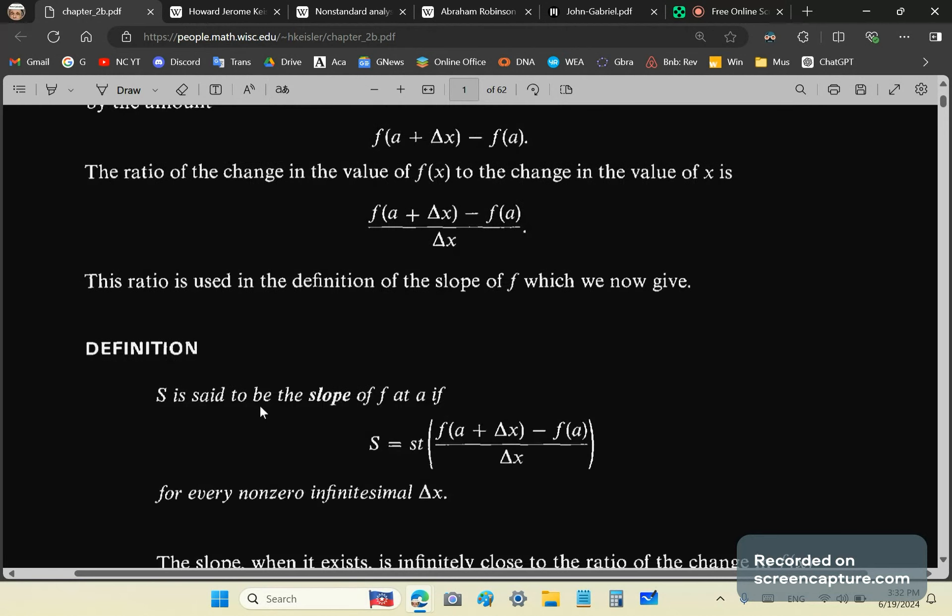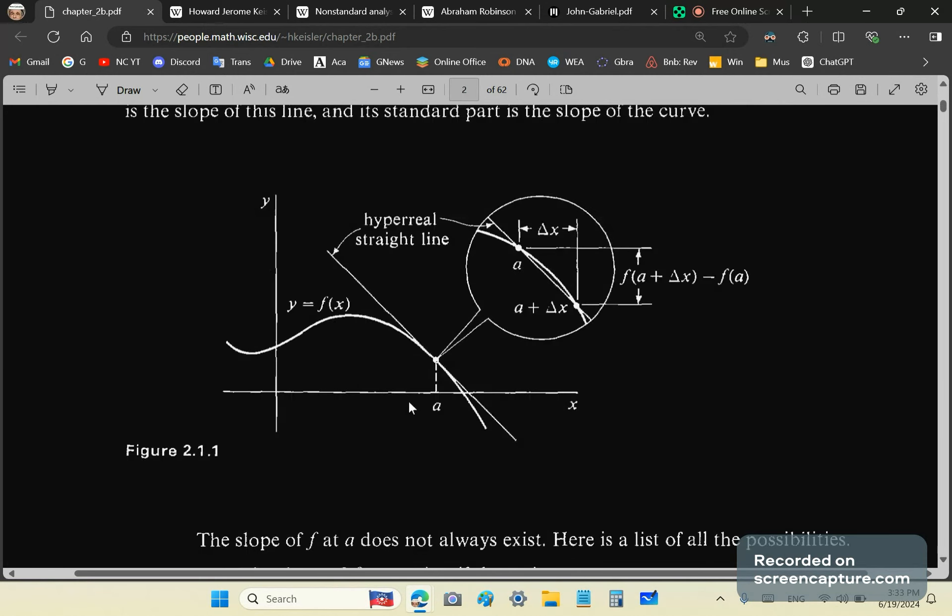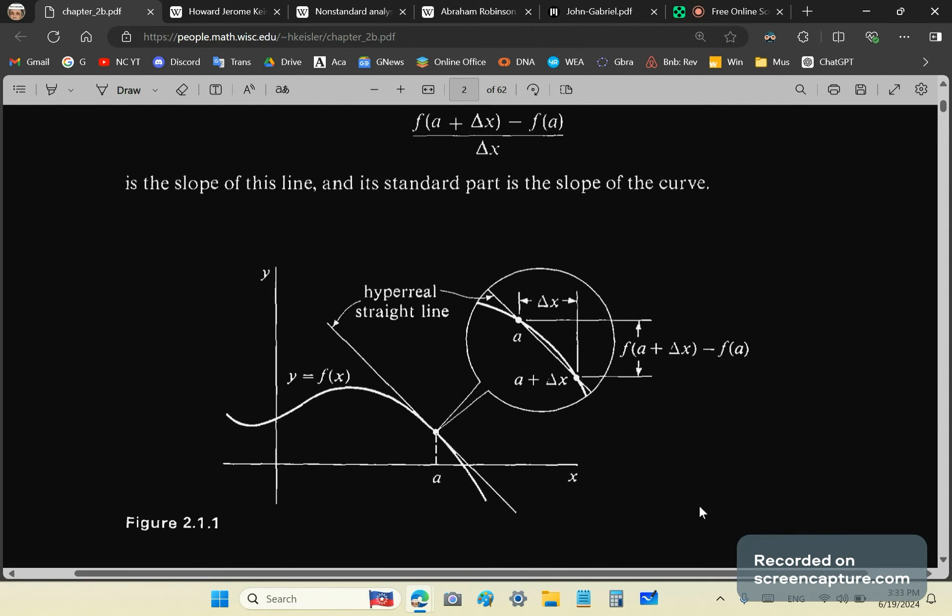And he says then this ratio is used in the definition of slope of F, which we now give. I'll place a link to this so that you can see if you can make any sense out of it because guess what? I can't. It's total nonsense. So he says S is said to be the slope of F at A if S is equal to ST of this. Now ST, I believe reading on stands for the standard part. Now, this here is just hand-waving BS again because it basically assumes, and we'll look at this diagram here, it assumes that the hyperreal line is a tangent line.